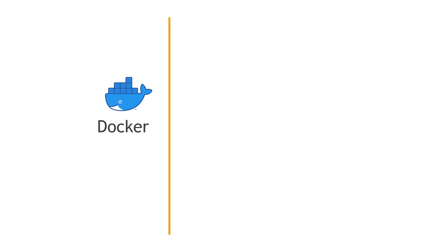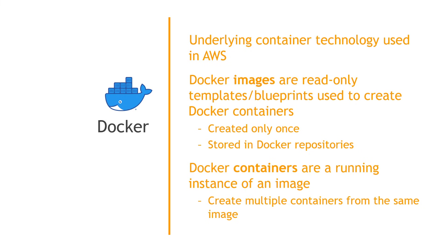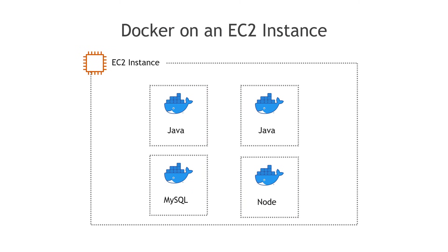The most popular technology for containers today — and it's the one used by AWS — is Docker. There are a few terms you're going to hear. There's a Docker image, which is a read-only, unchangeable template or blueprint that you use to create a Docker container. This is only created once, and these images are stored in Docker repositories — so you could find one right now for Java, Node, Python, or whatever you need. And then a Docker container is basically a running instance of the image, so you take the image and create multiple containers from it. As it relates to AWS, you might have something like this: on an EC2 instance, you're running four Docker containers — maybe two for Java, one for MySQL, and one for Node — and all the dependencies needed for each container are bundled up in the container itself.